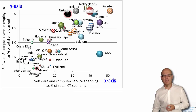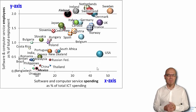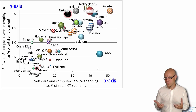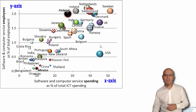We can see that some countries — for example, the US — spend 45%, almost half of its entire IT budget, on software and computer services. The rest it spends on hardware.